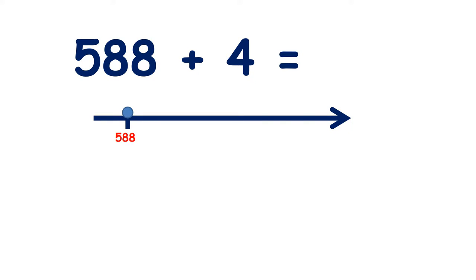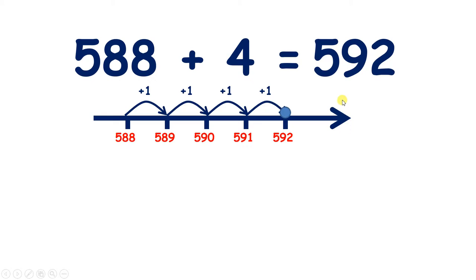Let's add 4 to 588. So if we count on 4 we have 589, 590, 591, 592. So 588 add 4 equals 592.